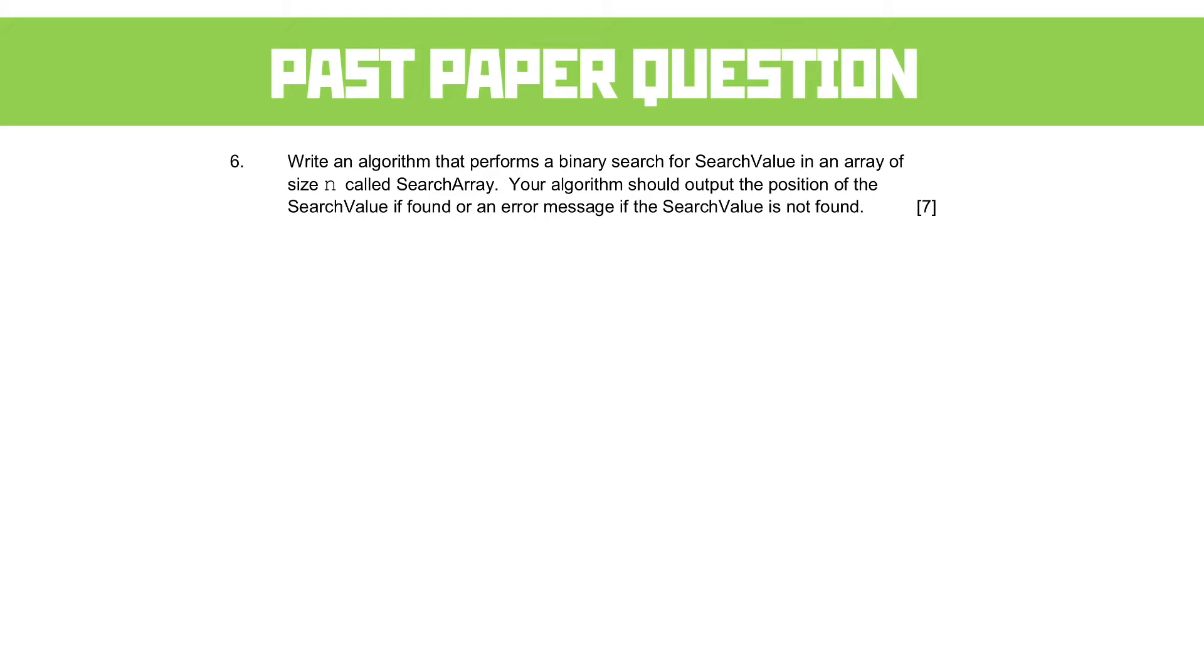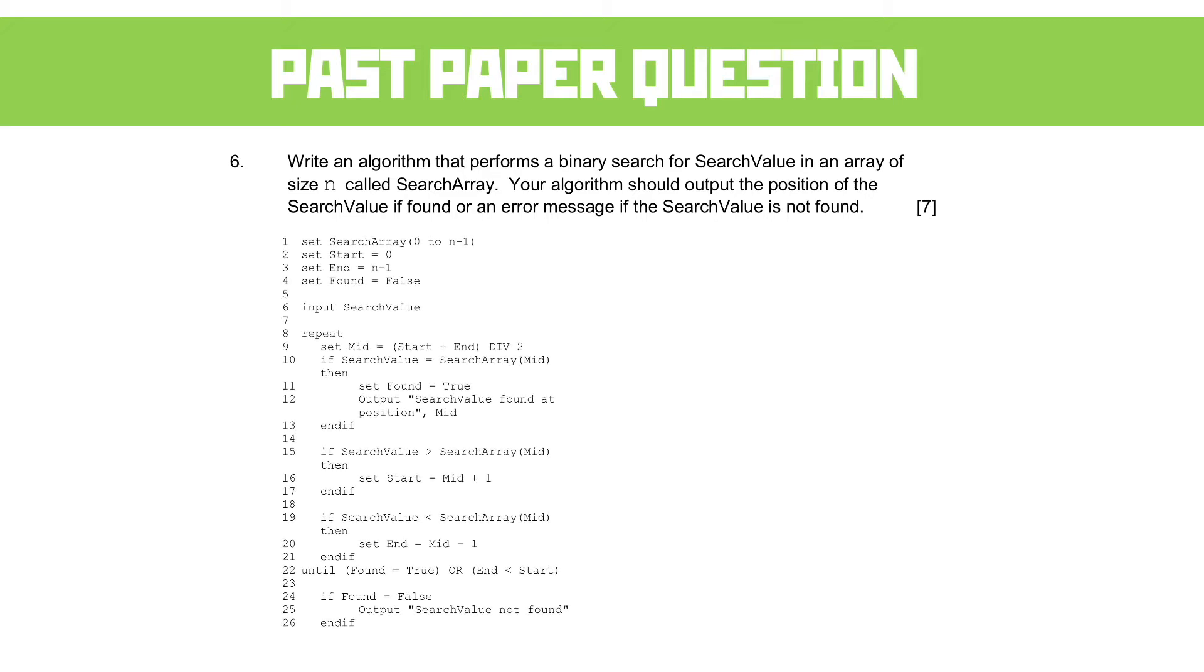I'm not going to read through the pseudocode for you because you can do that on your own, but let's look where the marks are coming from. You get a mark for declaring an array and initializing variables, so always make sure you do those first.